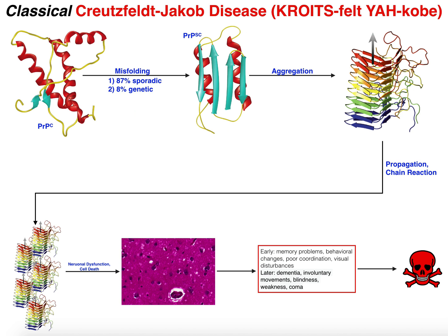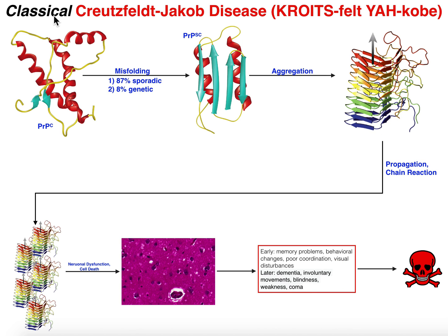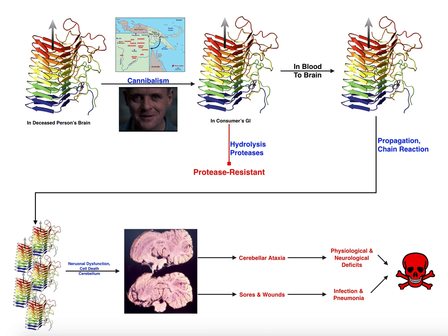It's hypothesized that originally someone on the island of Papua New Guinea in those tribes actually developed classical Creutzfeldt-Jakob disease. They believed the person was possessed by a spirit, so when they died, the people consumed the brain of someone who had classical CJD. Then the people took in this aggregation of prion proteins and developed something similar. In the context where the disease is transferred to other people by consumption, it's called Kuru, but its ultimate origin was classical Creutzfeldt-Jakob disease.